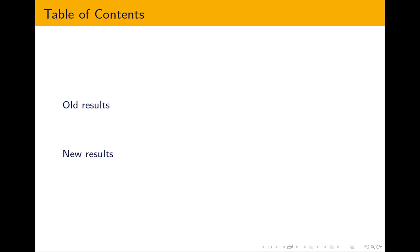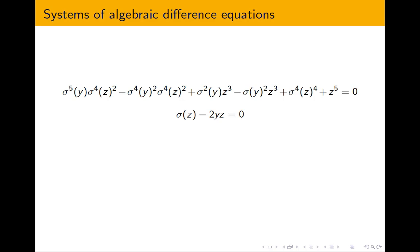I'd like to start by reminding you what a system of algebraic difference equations is. It's similar to a system of algebraic equations, except you also have sigmas. This is an example with two equations and two variables, y and z. Another way to say it: it's the same as a system of algebraic differential equations, but instead of a derivation, you have a sigma, which must be interpreted as a ring endomorphism.